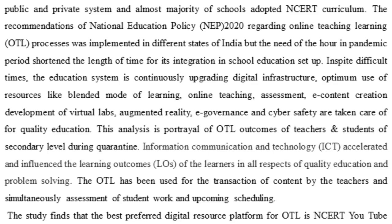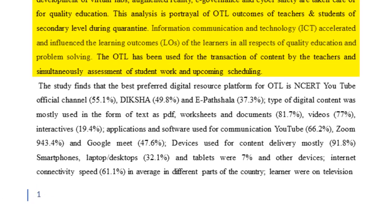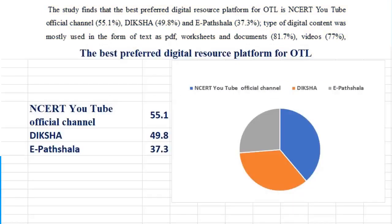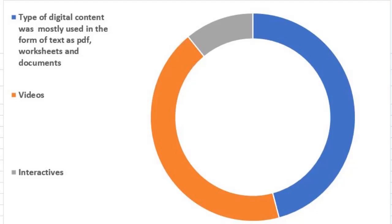Optimum use of resources like blended mode of learning, online teaching, assessment, e-content creation, development of virtual labs, augmented reality, e-governance, and safety were taken care of for quality education. This analysis portrays OTL outcomes of teachers and students at the secondary school level during the quarantine period. Information communication technology accelerated and influenced learning outcomes. The study found that the preferred digital resource platform for OTL is the NCERT YouTube channel official, used by around 51.1%. Diksha is around 49.8% and e-Pathshala is around 37.3%. Digital content was mostly used in the form of text, worksheets, and documents, at around 81.7%.